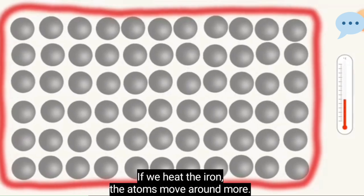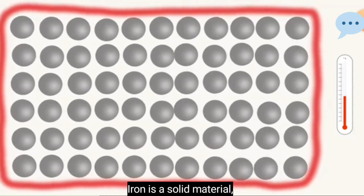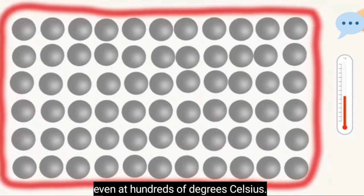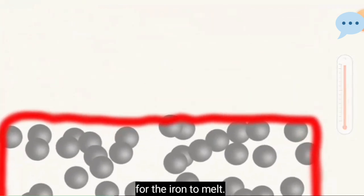If we heat the iron, the atoms move around more, but they still stay in their places. Iron is a solid material, even at hundreds of degrees Celsius. We need over a thousand degrees for the atoms to start to move out of place, for the iron to melt.